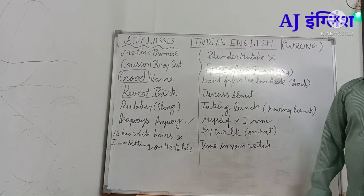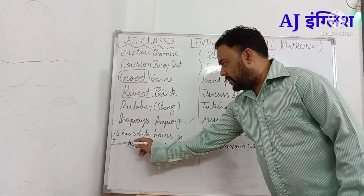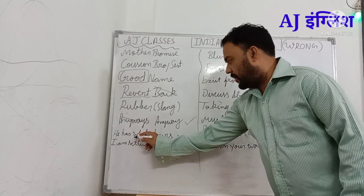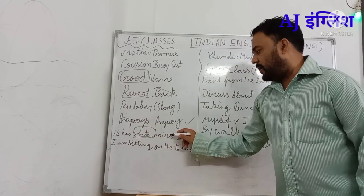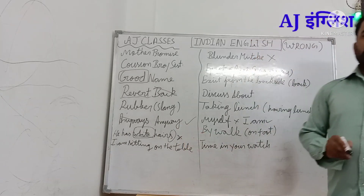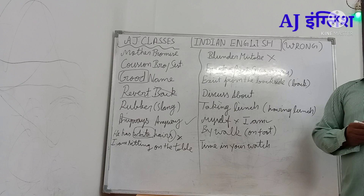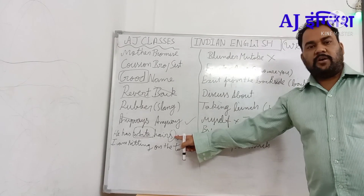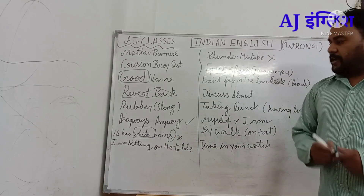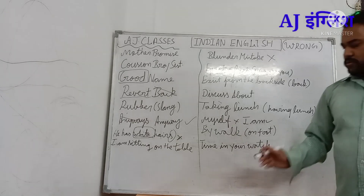People say 'he has white hairs.' Two mistakes here: first, use 'gray' instead of 'white'; second, 'hair' is an uncountable noun, so don't add 's.' The correct sentence is: 'he has gray hair.'